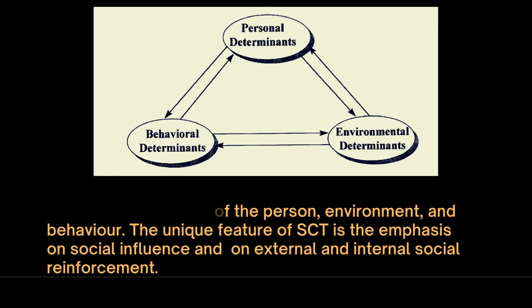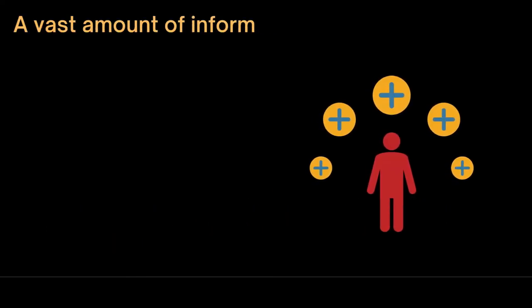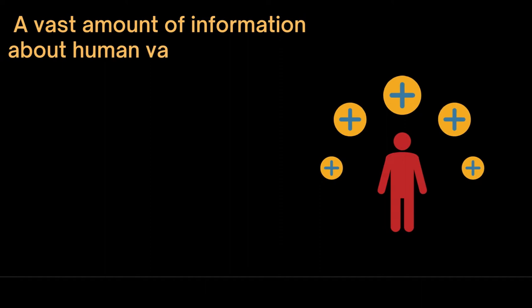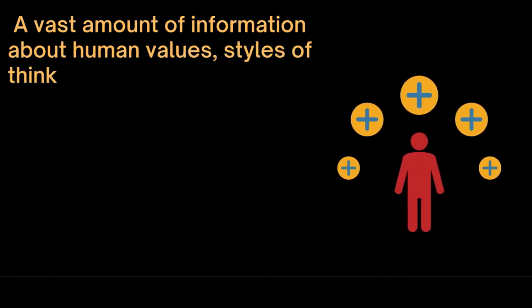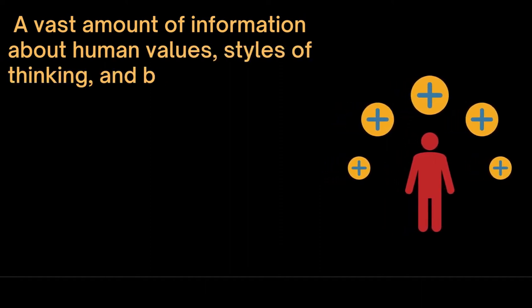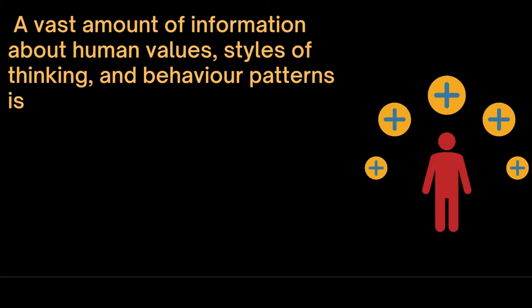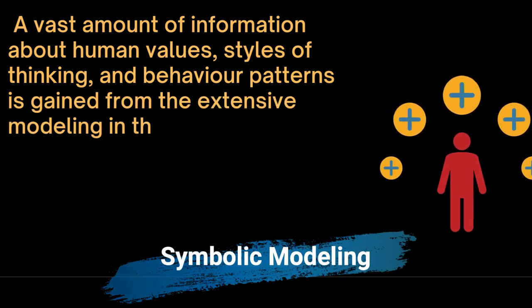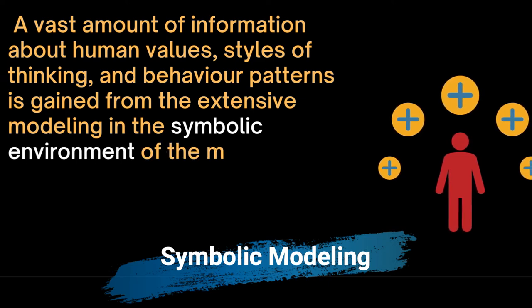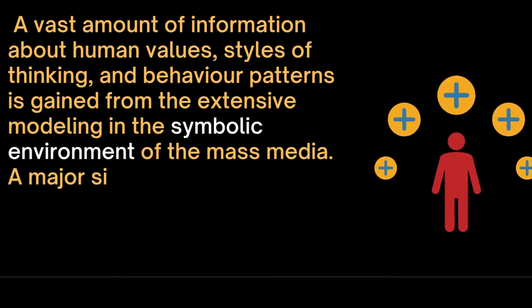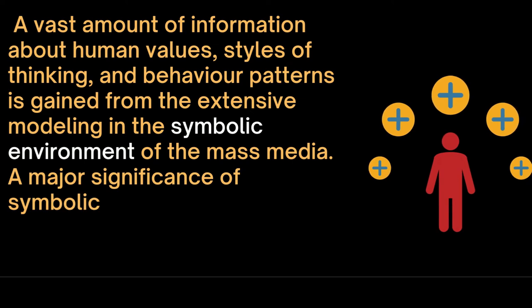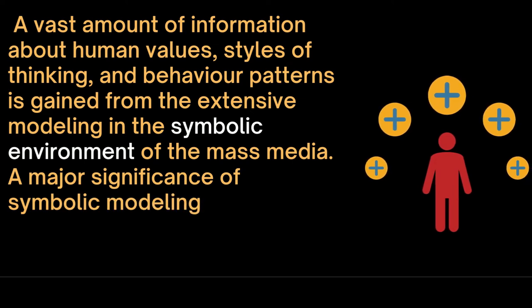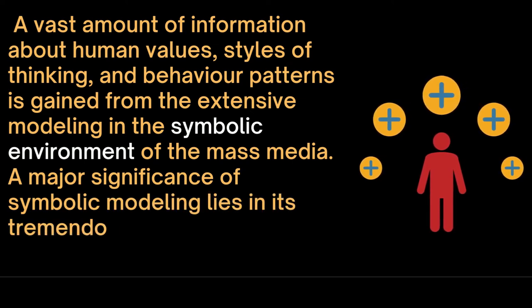The unique feature of social cognitive theory is its emphasis on social influence and on external and internal social reinforcement. A vast amount of information about human values, styles of thinking, and behavior patterns is gained from the extensive modeling in the symbolic environment of the mass media. A major significance of symbolic modeling lies in its tremendous reach and psychosocial impact.